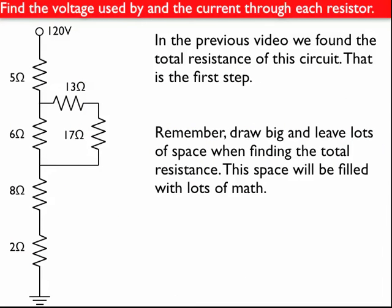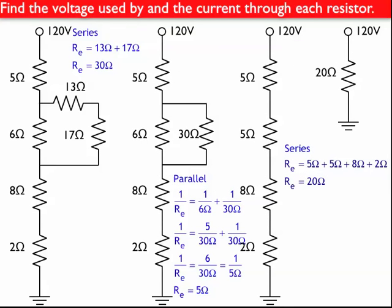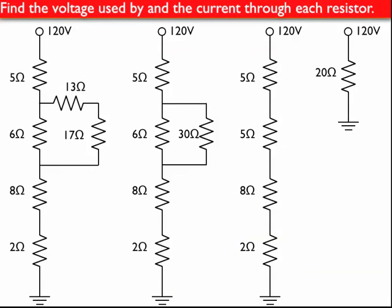This was the original question. Find the voltage used by and the current through each resistor, and here's my circuit to start with. In the previous video, we already worked it down to a single resistor doing all these steps. Now I'm going to get rid of the blue work, so I have some space to show you some new math.